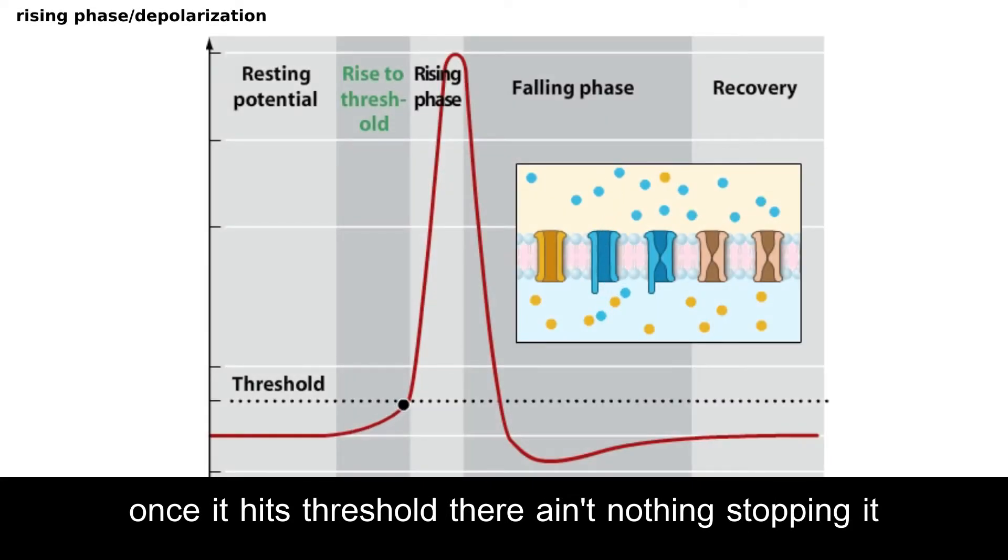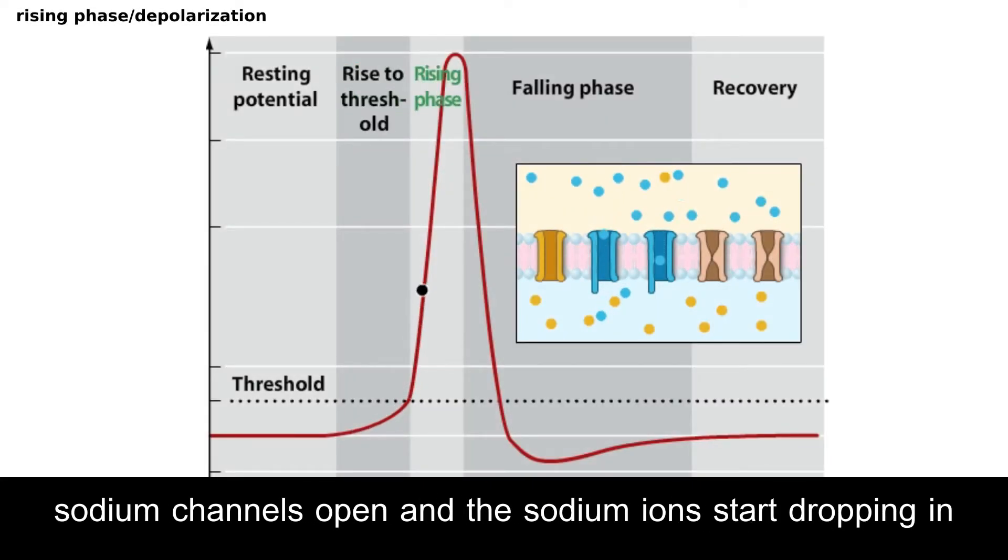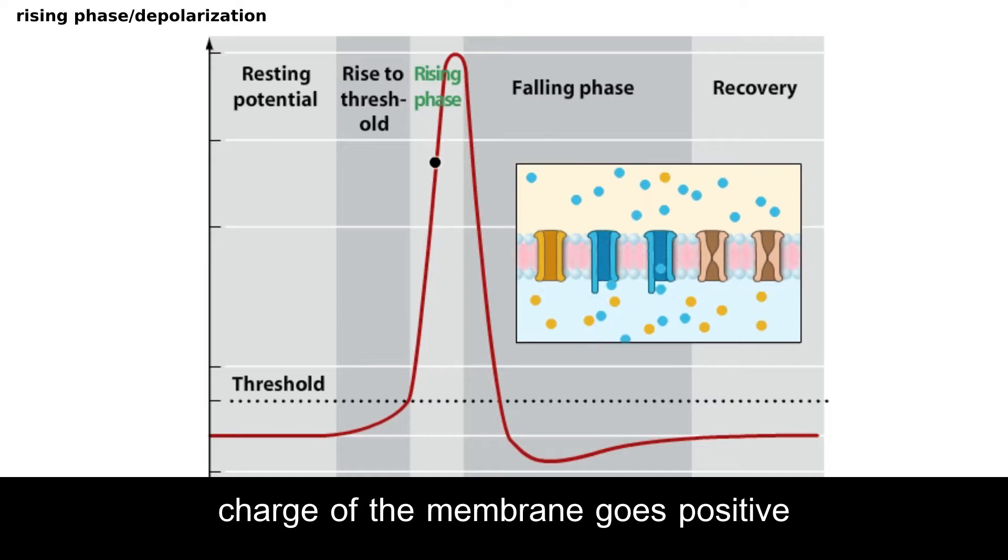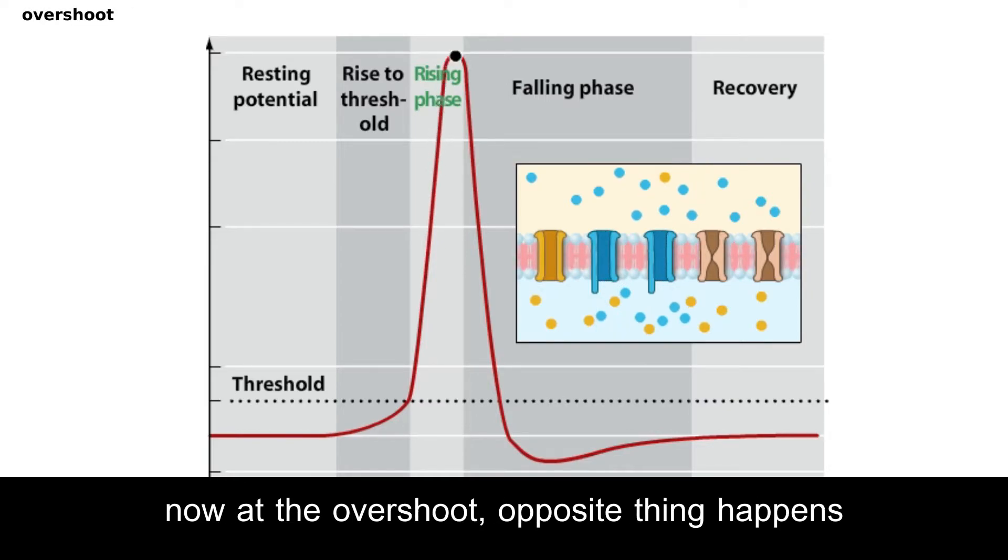Once it hits threshold, there ain't nothing stopping it. Sodium channels open and the sodium ions start dropping in. The charge of the membrane goes positive, now with the overshoot. Opposite thing happens, positive to negative, it swings backwards.